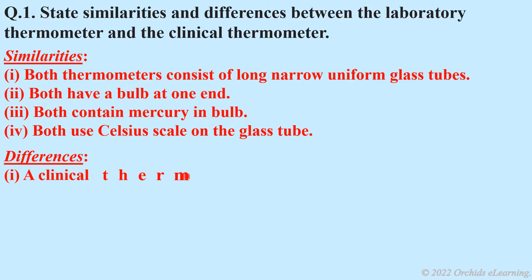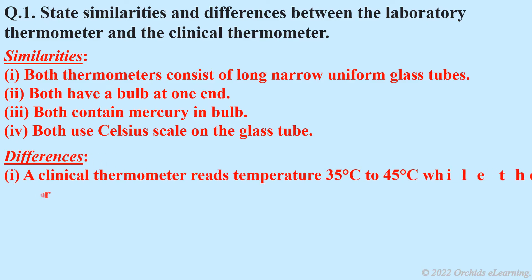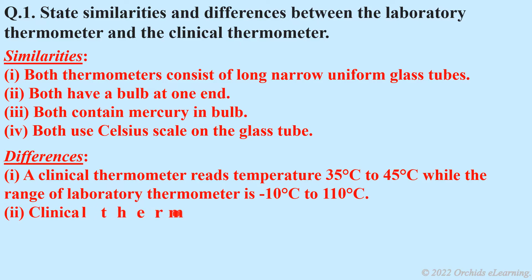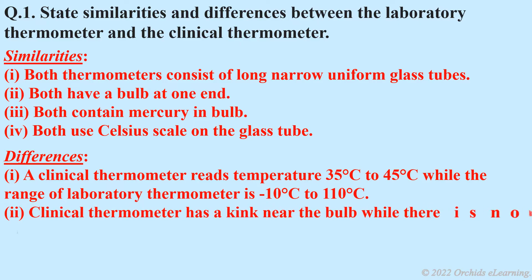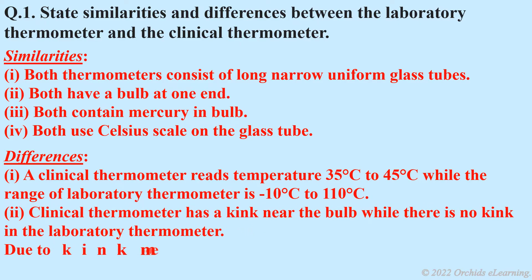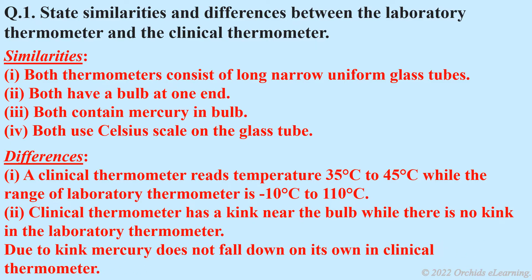Differences: A clinical thermometer reads temperature from 35 degrees Celsius to 45 degrees Celsius, while the range of a laboratory thermometer is minus 10 degrees Celsius to 110 degrees Celsius. A clinical thermometer has a kink near the bulb, while there is no kink in the laboratory thermometer.